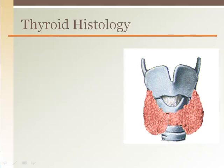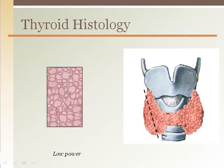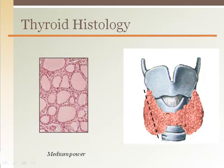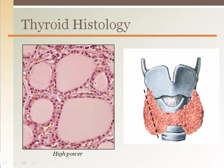When we look at a thin slice of the thyroid gland under a microscope under low power, we first notice a pattern of many circles. Looking more closely, we can see dots surrounding the pink colored circles. Then at high power, it becomes more clear that the dots surrounding the circles are actually cells.